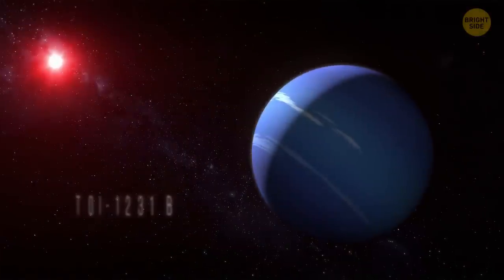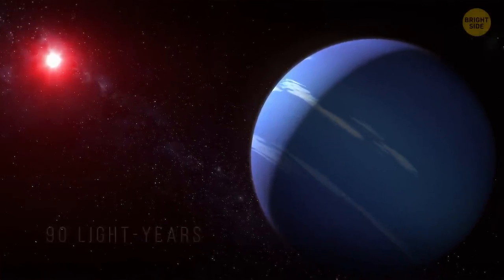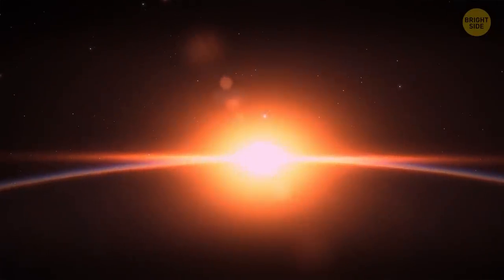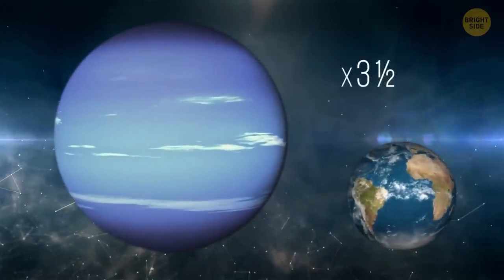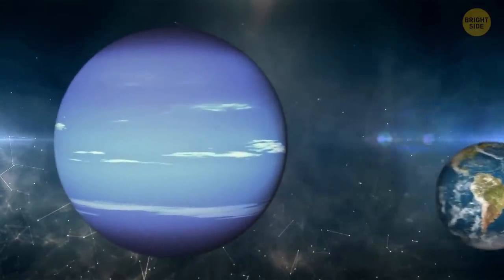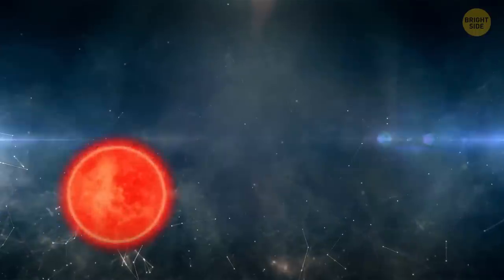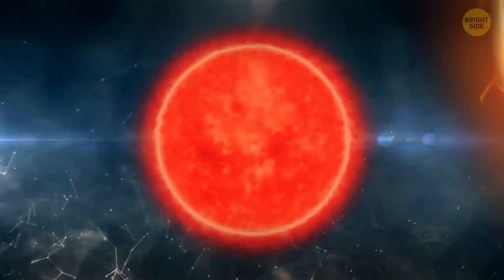There's a planet, TOI-1231b, around 90 light-years away from Earth. It's similar to our Neptune. It's a gas giant, but the most interesting thing is that this planet is likely to be rich in atmosphere. The planet is over 3.5 times as large as Earth, and a bit warmer than we're used to, 134 degrees Fahrenheit. It orbits a red dwarf star, way smaller than our sun. But this star is also much older.